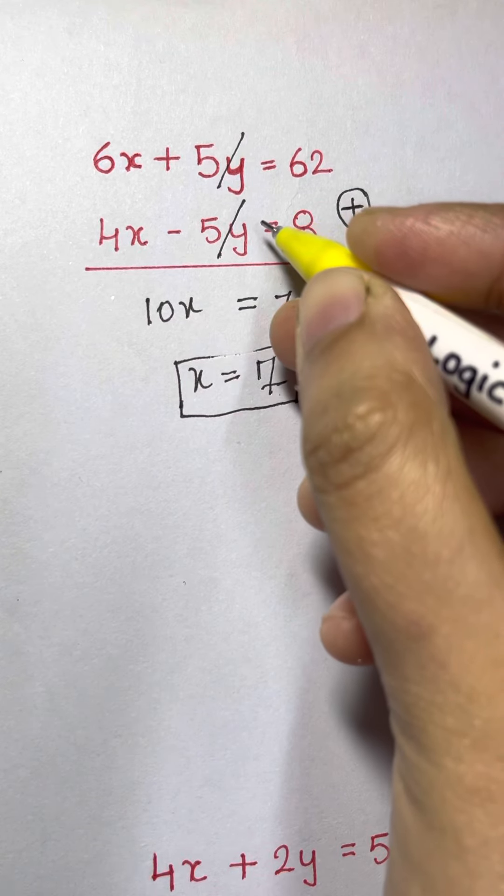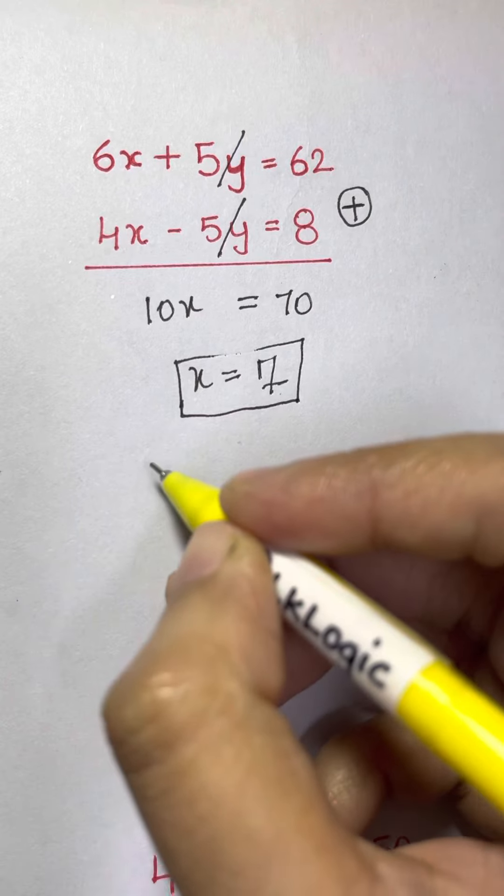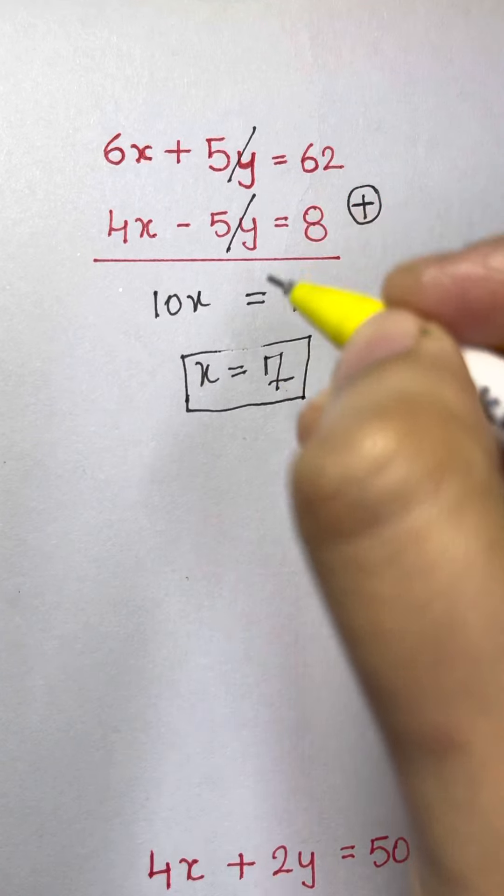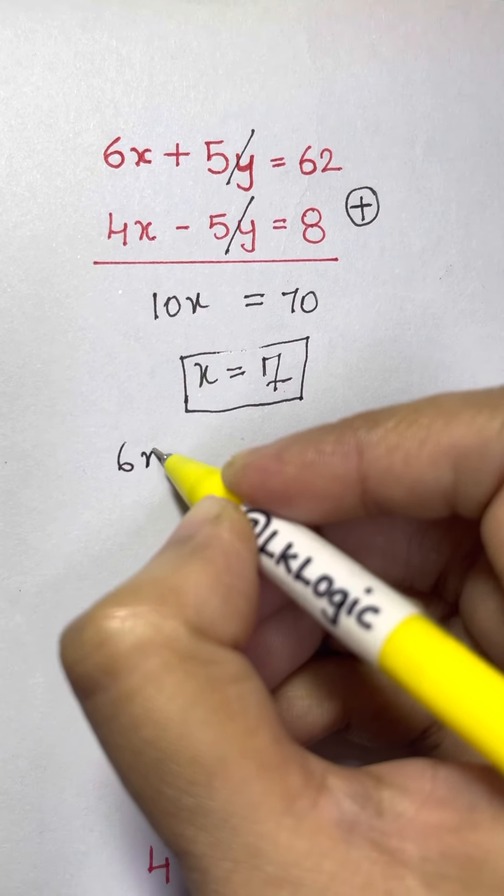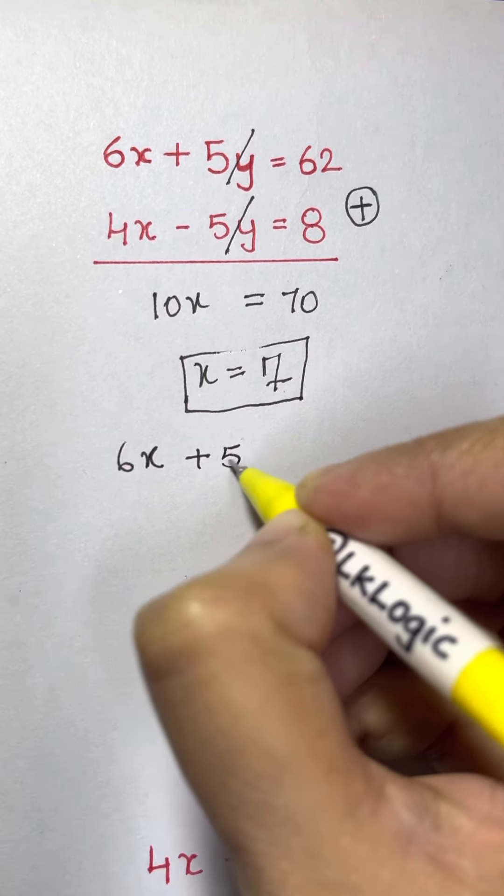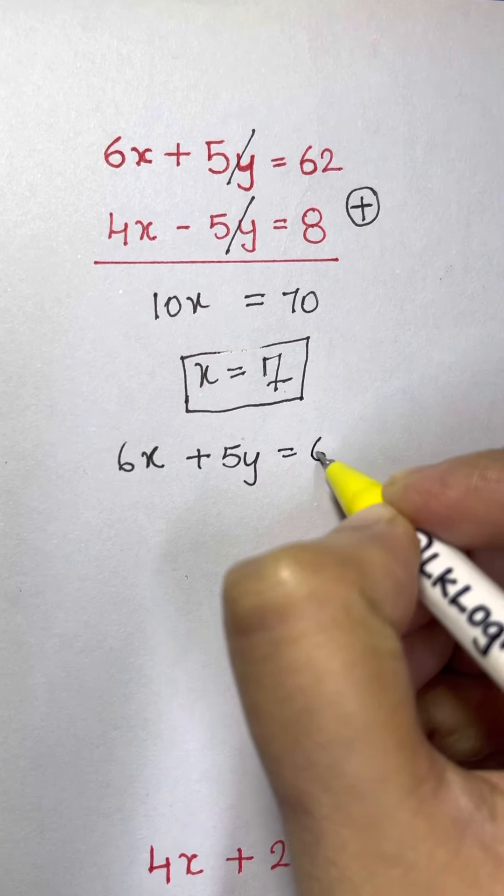So now how to find the other variable y? You just substitute the value of x in one of the equations. Either of them, because they are going to give you the same answer. So let's substitute in this, 6x plus 5y equals to 62.